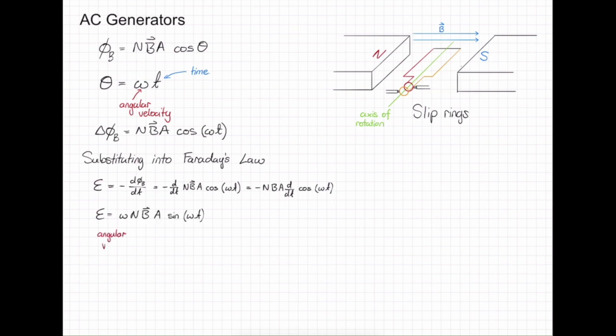So our EMF is equal to our angular velocity, times by the number of coils, multiplied by the magnetic field, the area of the coil, and the rotation of the coil in the magnetic field.